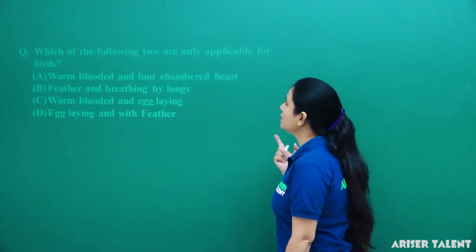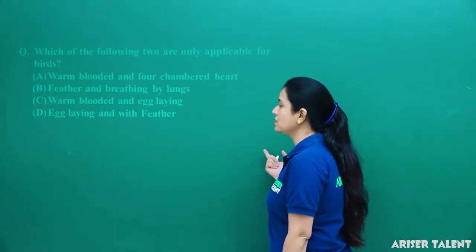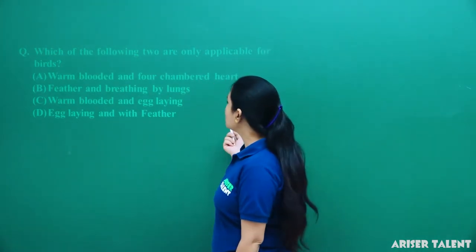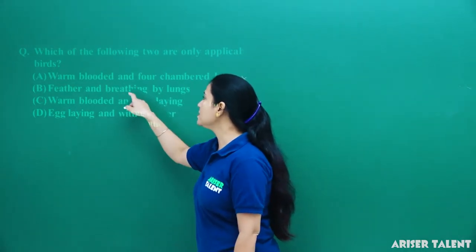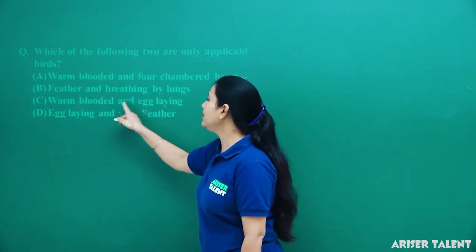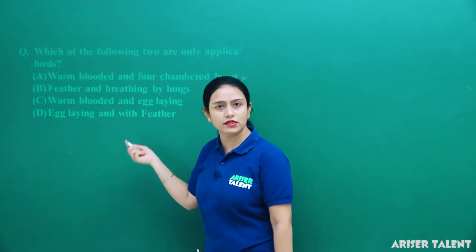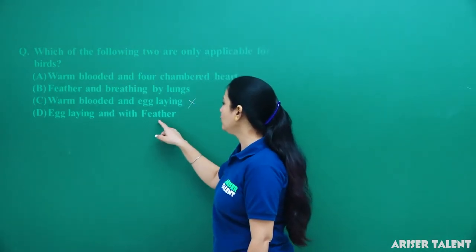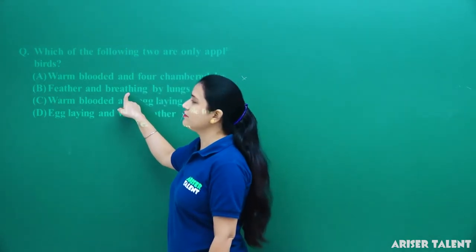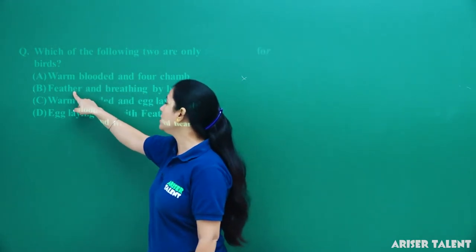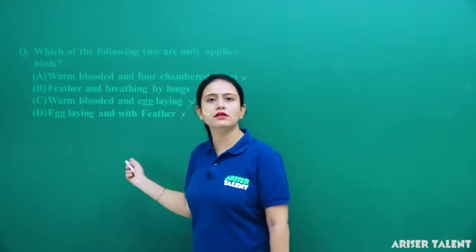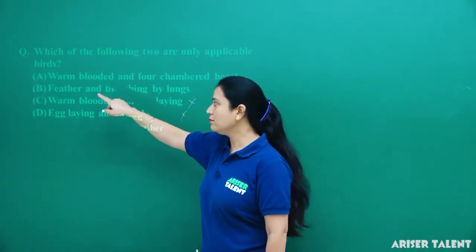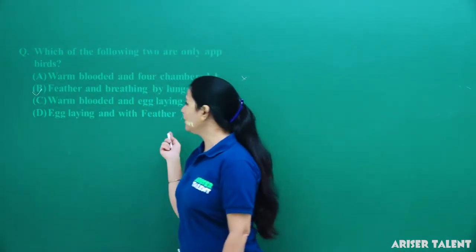Next, which two characters are only applicable for birds? Warm-blooded and four-chambered heart — this feature can be found in other groups also. Feathers and breathing by lungs — yes, this can be specific to birds. Warm-blooded and egg-laying — these features can be found in other animals too. Egg-laying and feathers — can also be found in others. So feathers and breathing by lungs is the only feature found exclusively in birds. Option B is the correct answer.